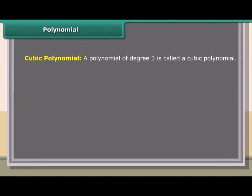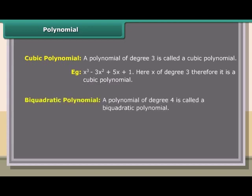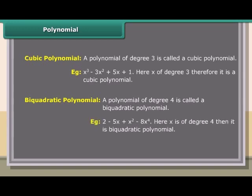A polynomial of degree 4 is called a biquadratic polynomial. Example: 2 − 5x + x² − 8x⁴, where x is of degree 4, so it is a biquadratic polynomial.